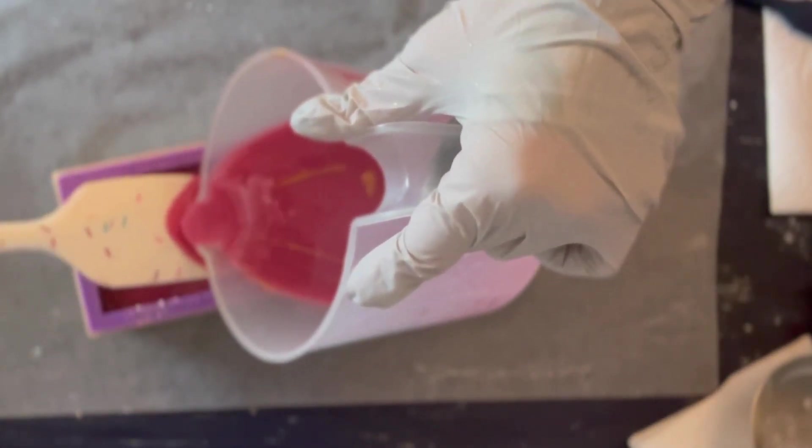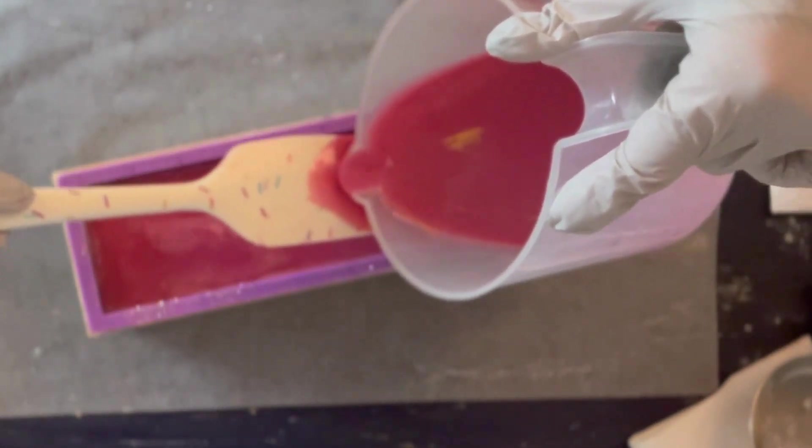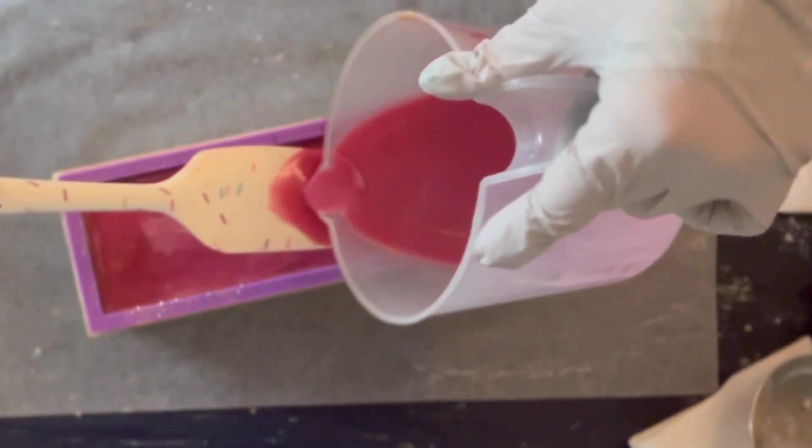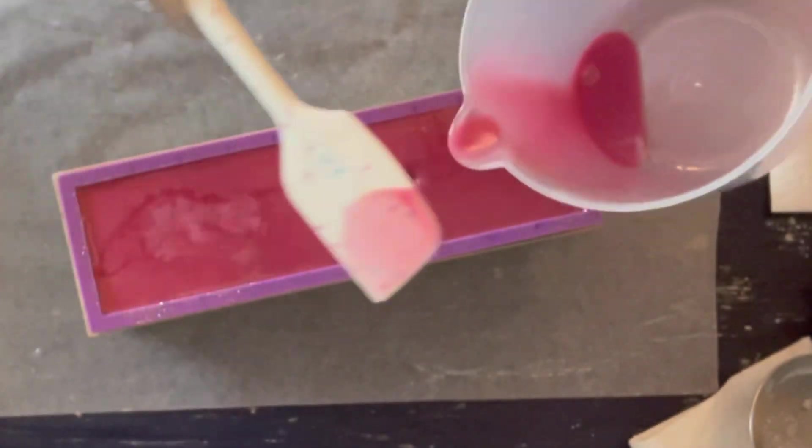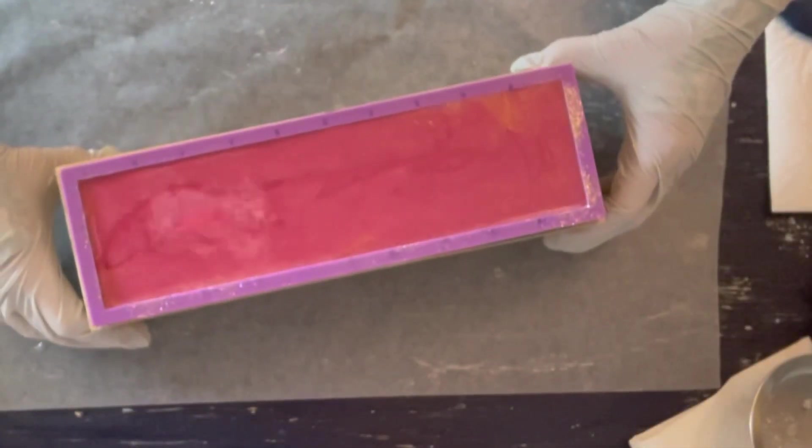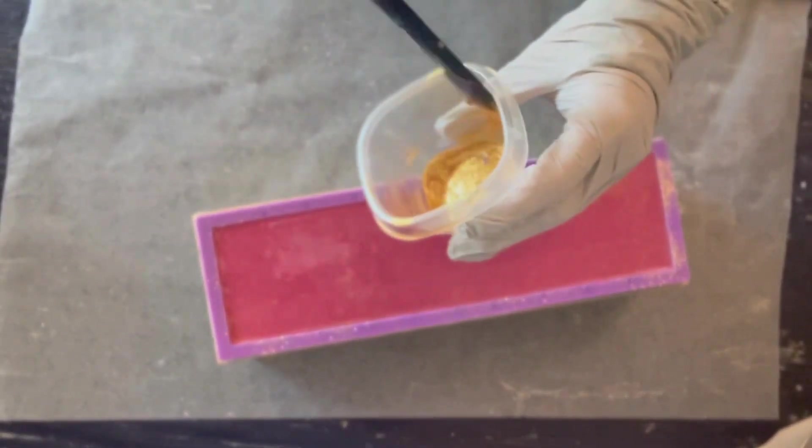I try to force gel phase if I can because it tends to give a slightly brighter bar. I really like the bright colors. So I tend to try to force gel phase by insulating. I have used a hot pad before, laying a hot pad underneath the mold and then putting a box on top.